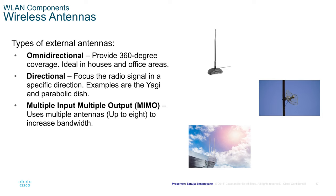Most routers and modem-router combinations provided by your ISP almost always use omnidirectional antennas. Directional antennas focus the radio signal in a specific direction. The most common examples of directional antennas are the Yagi and the parabolic dish.